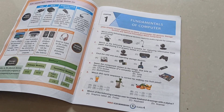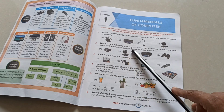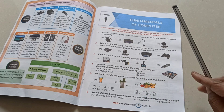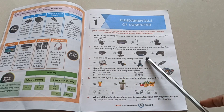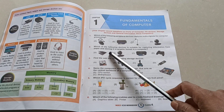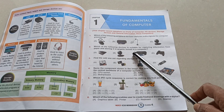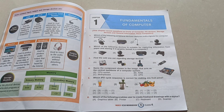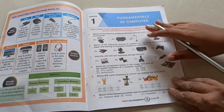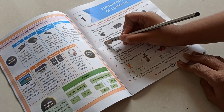Second question: Which of the following devices is suitable for capturing information from paper and storing it in a graphic format in a computer? The answer is Scanner. Very good — tick this one.